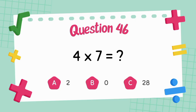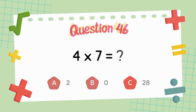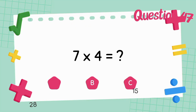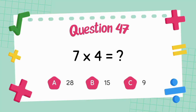What is four multiply seven? The answer is twenty-eight. What is seven multiply four?